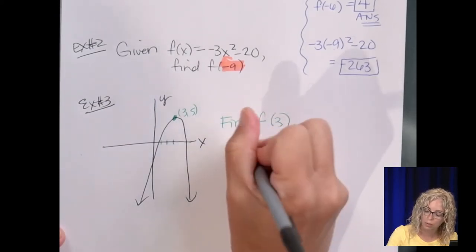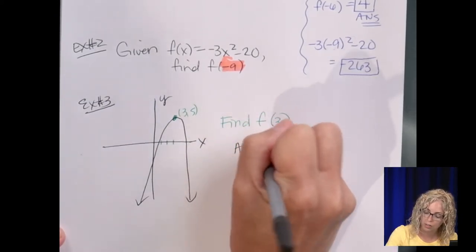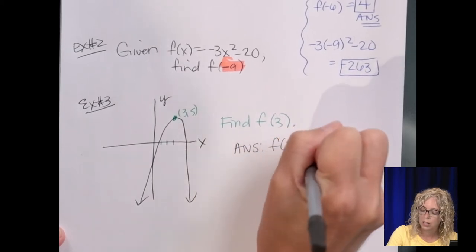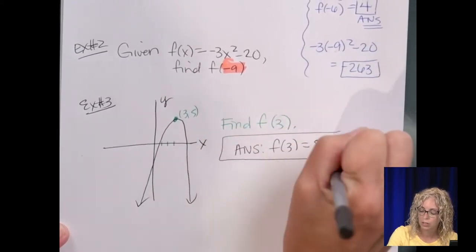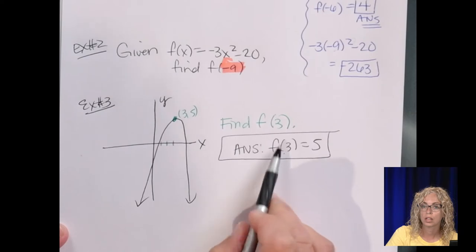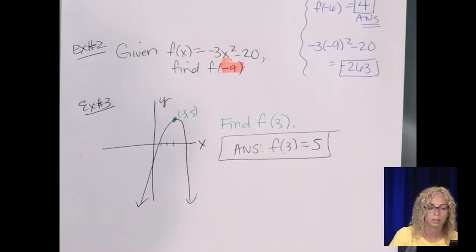Okay, so f of three, my answer, f of three equals five. So it's saying when x is three, what's y? Okay, so let's look at a new problem. It's all the same type.